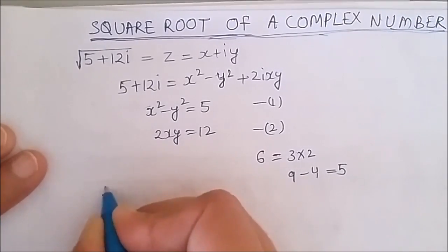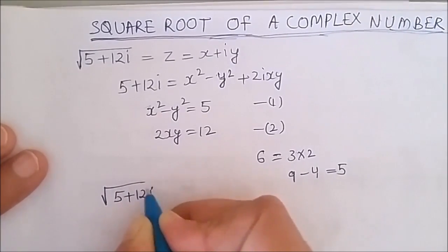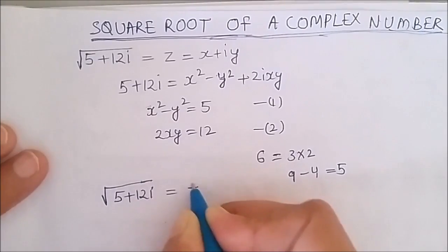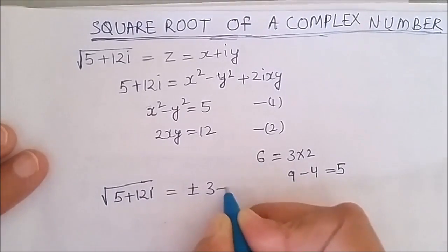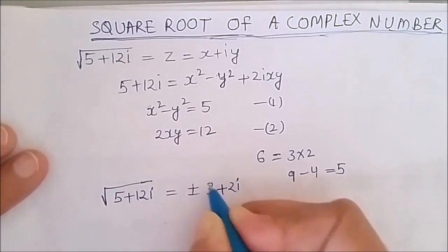By looking at the complex number, I can say that square root of 5 plus 12 iota is equal to plus minus (3 plus 2 iota).